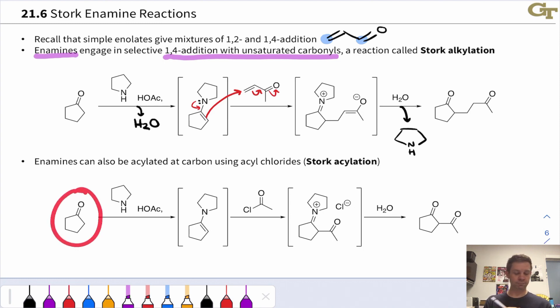So we start with the ketone that we want to acylate. Aldehydes can also be used. We condense with a secondary amine, such as pyrrolidine in acid, acetic acid. This generates an enamine intermediate. And then we treat that enamine solution, enamine-containing solution, with the acyl chloride.